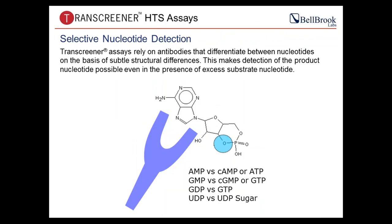Transcreener Assays are a competitive immunoassay and the assay itself relies upon proprietary antibodies that can differentiate between nucleotides based on very subtle differences. For example, AMP antibodies can recognize monophosphate over triphosphate or the cyclic version of the same nucleotide. We also have antibodies that can recognize diphosphate — ADP or GDP — in the presence of ATP. This makes detection of the product possible in the presence of excess substrate nucleotide, including under initial velocity conditions following Michaelis-Menten parameters.